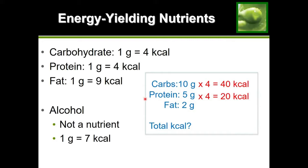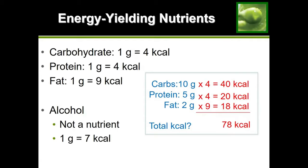Lastly, our food product contains 2 grams of fat. Each gram of fat provides 9 calories, so we do 2 times 9, which gives us 18 calories from fat. Now we total them up: 40 plus 20 plus 18 gives us a total of 78 calories in this food product.